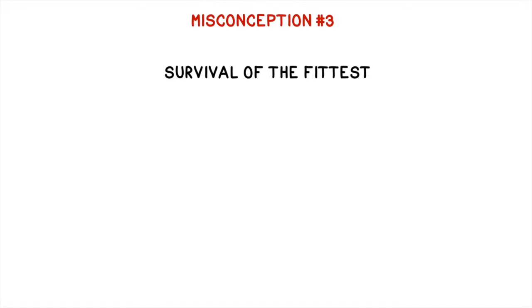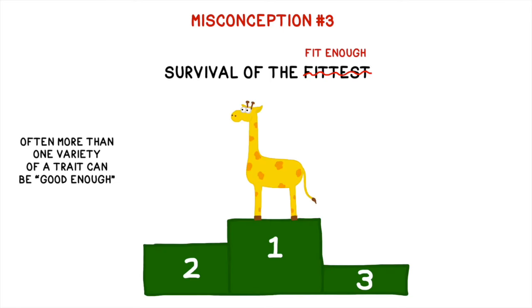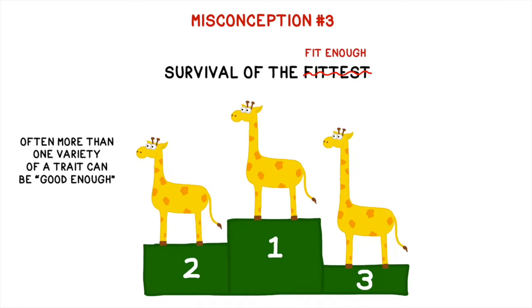This brings us to a slightly more nuanced misconception number three: survival of the fittest isn't quite the whole story. It's more like survival of the fit enough. The creatures who survive to pass on their genes aren't necessarily always the biggest, the strongest, or the fastest. Often, more than one variety of a trait is good enough. The runner-up giraffes can also survive to reproduce too.